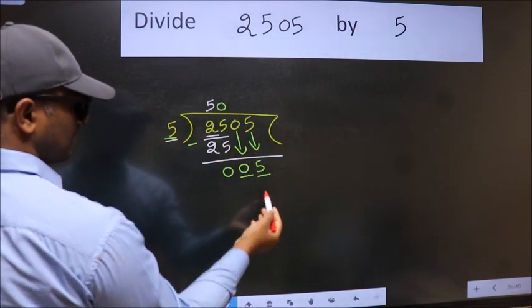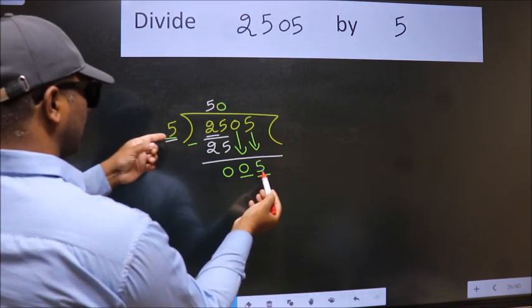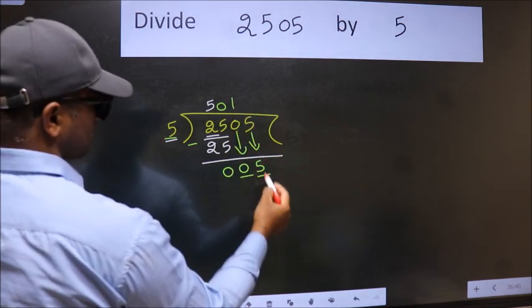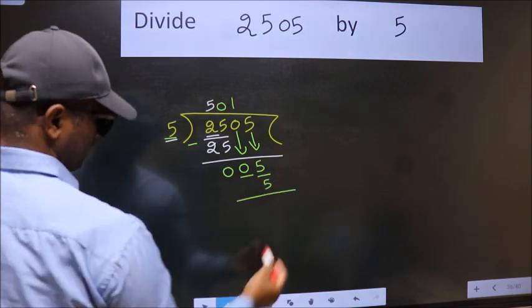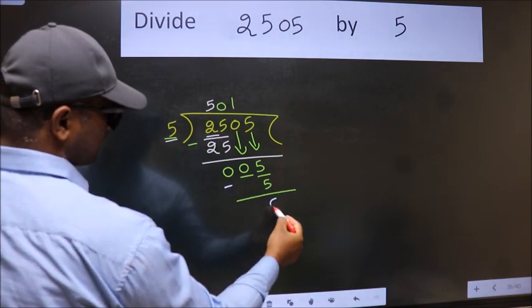So, 5. A number close to 5 in 5 table is 5 once 5. Now we subtract. We get 0.